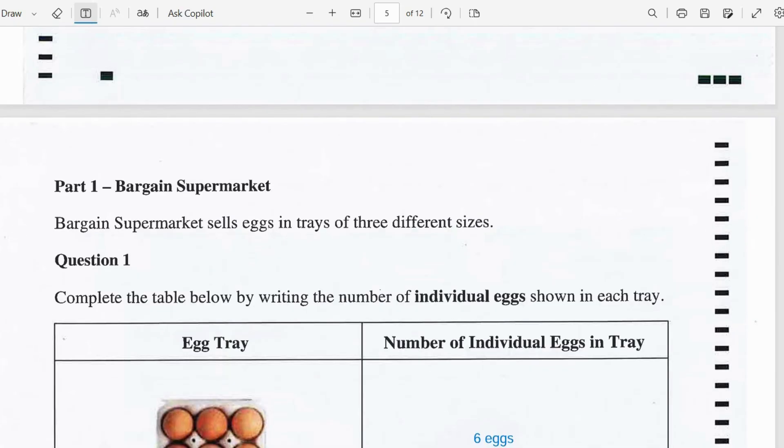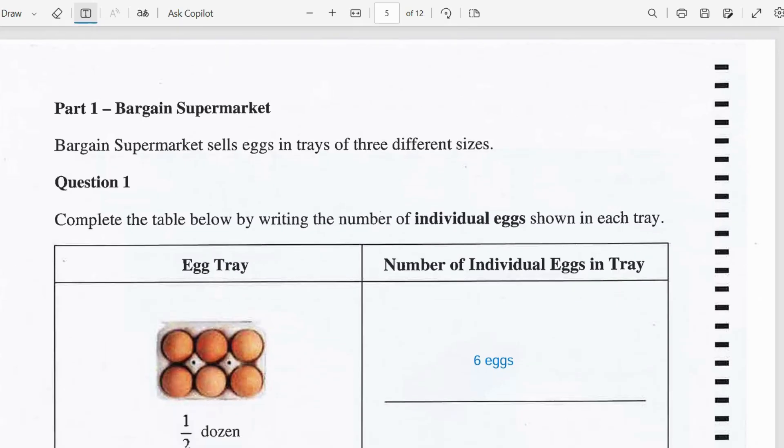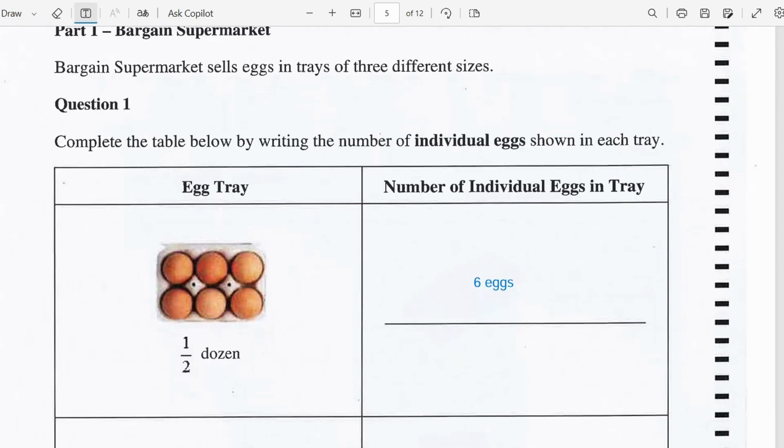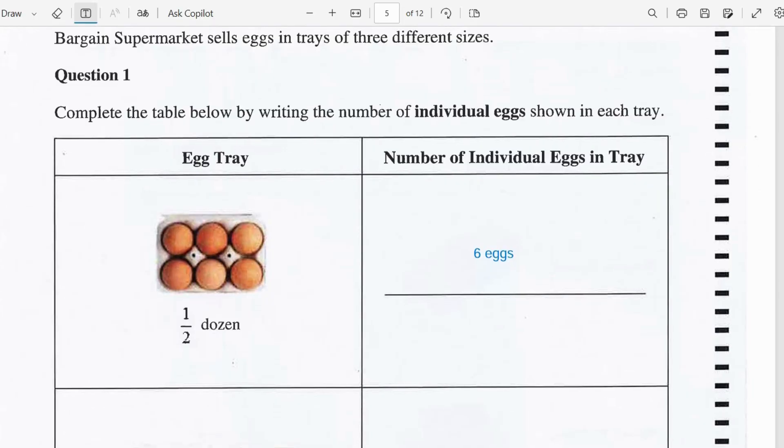Part 1, Bargain supermarket. Bargain supermarket sells eggs in trays of 3 different sizes. Question 1, complete the table below by writing the number of individual eggs shown in each tray.